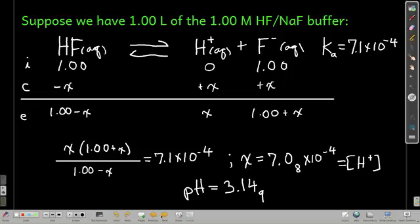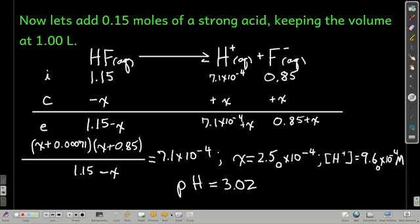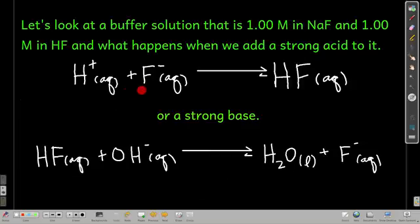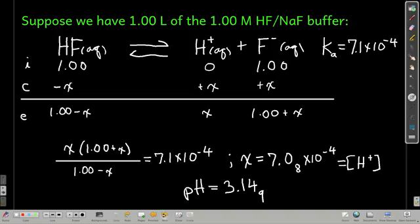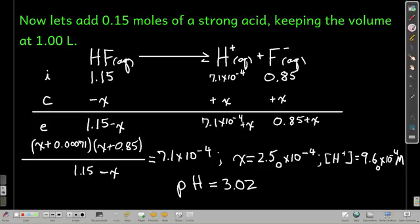Now let's add some strong acid to that and see what happens. Let's say we add 0.15 moles of the strong acid and keep the volume at 1 liter. The first thing that will happen when we add this 0.15 moles of the strong acid is what I showed you right back here. The proton from the acid will react with the fluoride ion to make hydrofluoric acid, and then we're going to look at the equilibrium. Let's put the regular double arrows there.